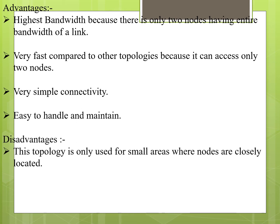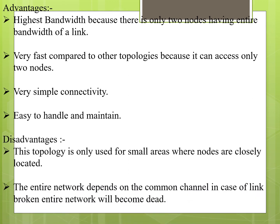Disadvantages of point-to-point topology: it can only be used for small areas where nodes are closely located, and we cannot use it for larger areas. The entire network depends on the common channel — if the link is broken, the entire network becomes dead because there is only a single cable.